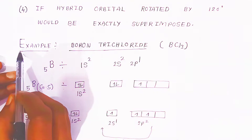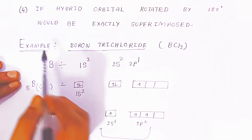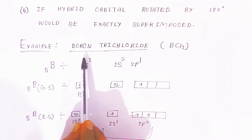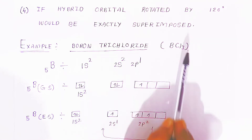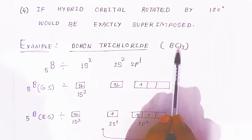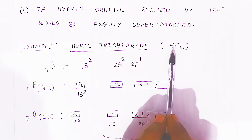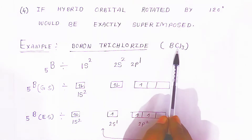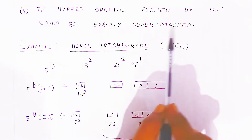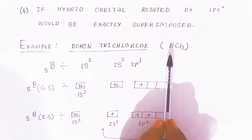We are going to see the examples. The first example is boron trichloride, that is BCl3. In boron trichloride, boron will be the central atom and chlorine is arranged around the boron.